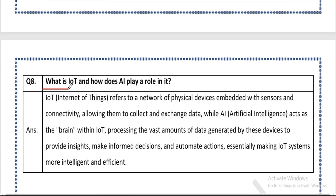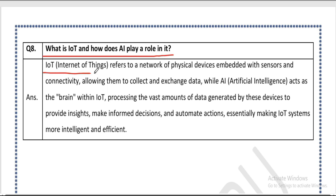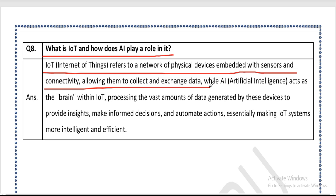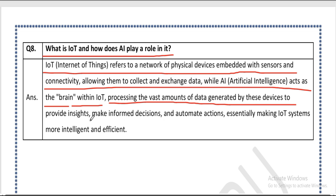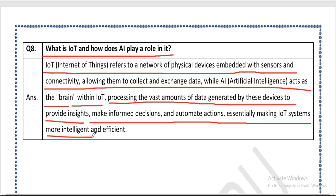Question eight: what is IoT and how does AI play a role in it? Answer: IoT, or Internet of Things, refers to a network of physical devices embedded with sensors and connectivity, allowing them to collect and exchange data. AI acts as the brain within IoT, processing the vast amount of data generated by these devices to provide insights, make informed decisions, and automate actions, making IoT systems more intelligent and efficient. These are the questions and their answers of Chapter 2, Significance and Impact of AI in Real Life.